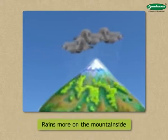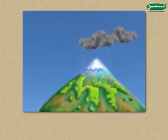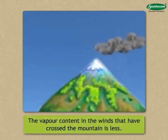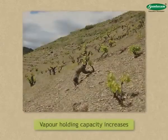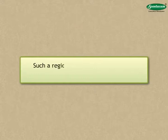It rains more on the mountainside where the winds are obstructed and rise upwards. The vapour content in the winds that have crossed the mountain is less. The vapour holding capacity of these descending winds also increases and hence it rains less. Such a region of low rainfall is called a rain shadow.